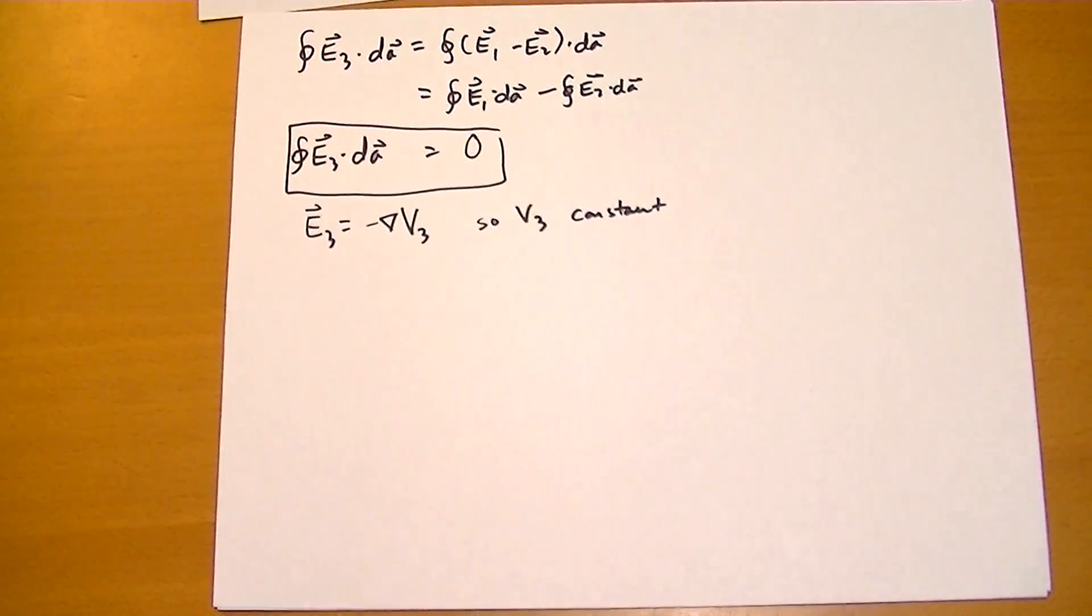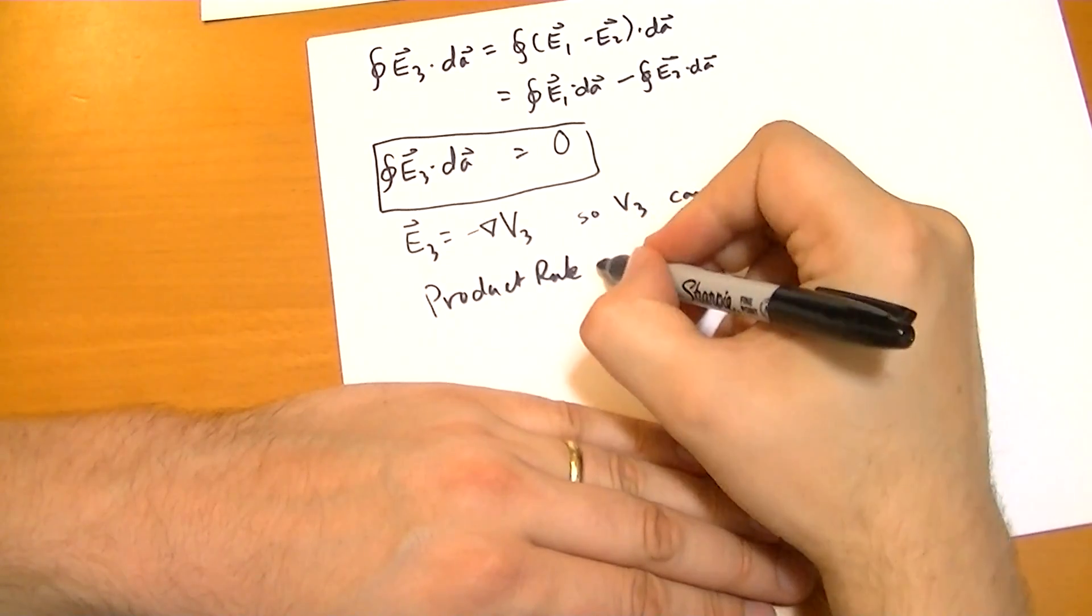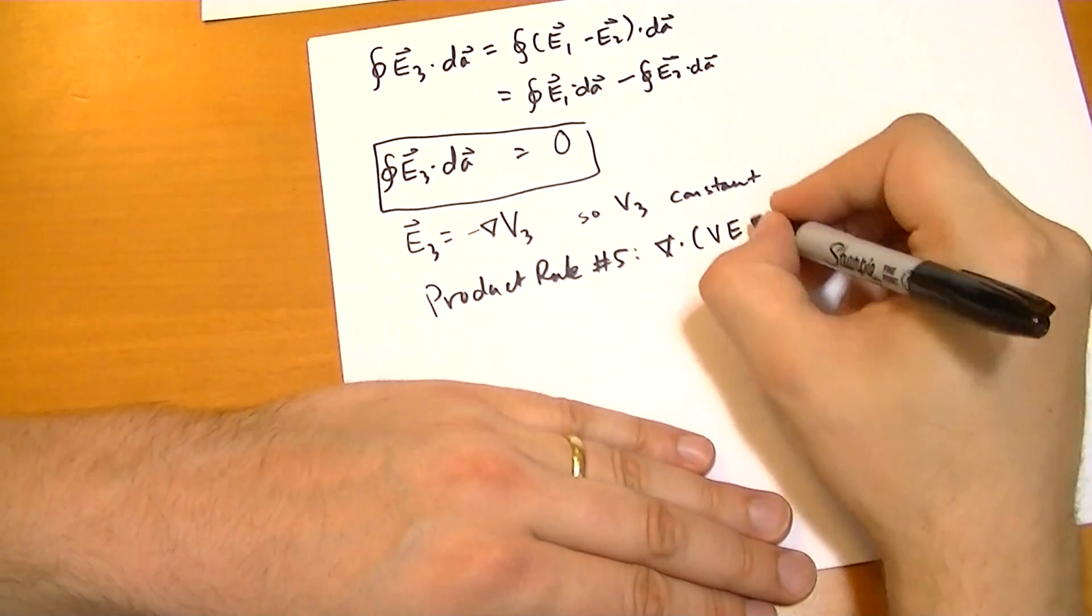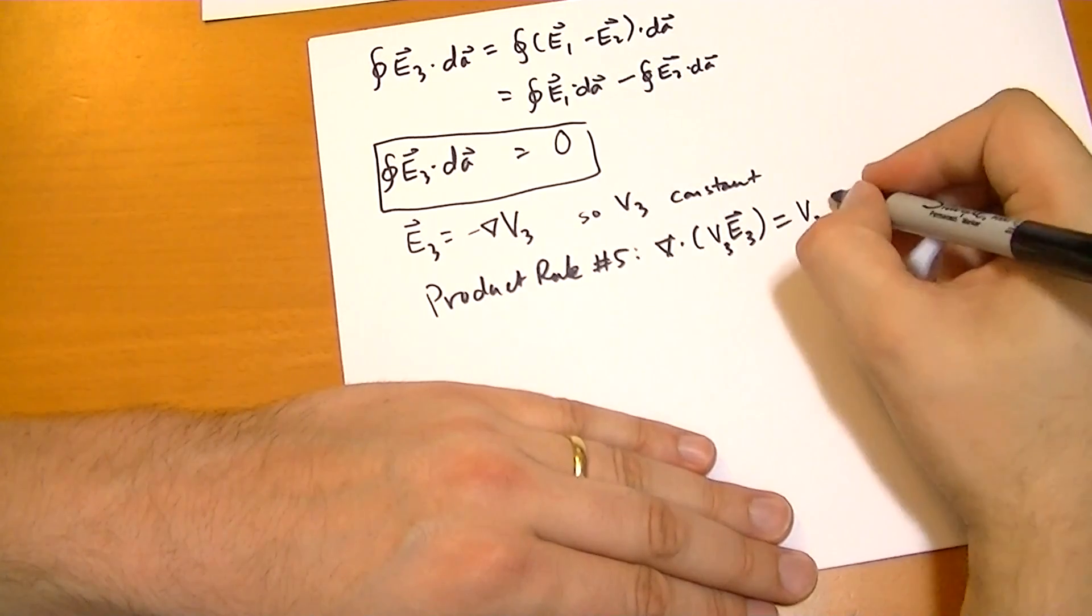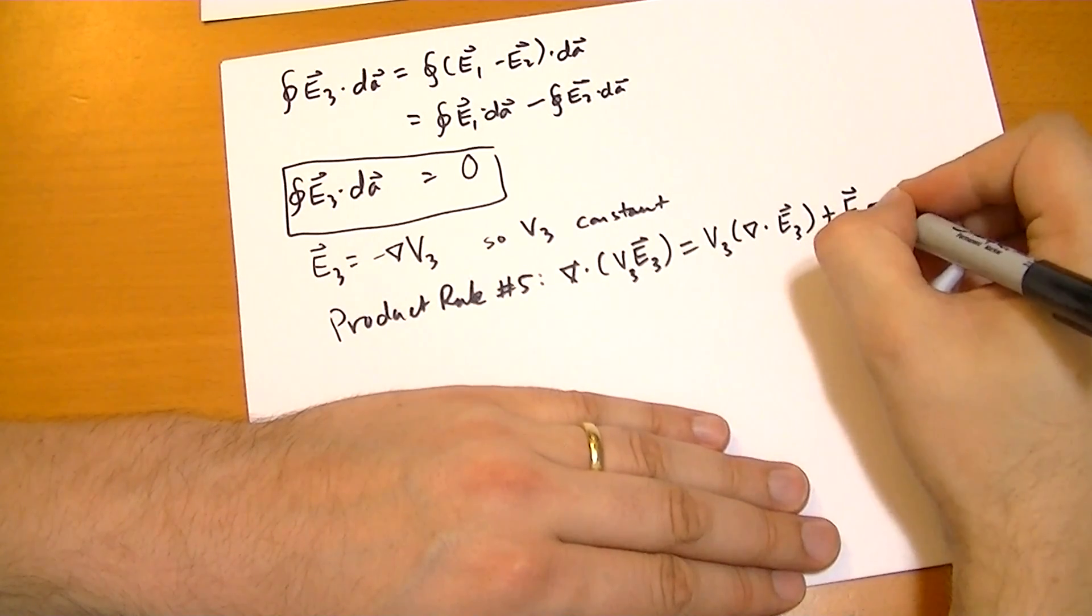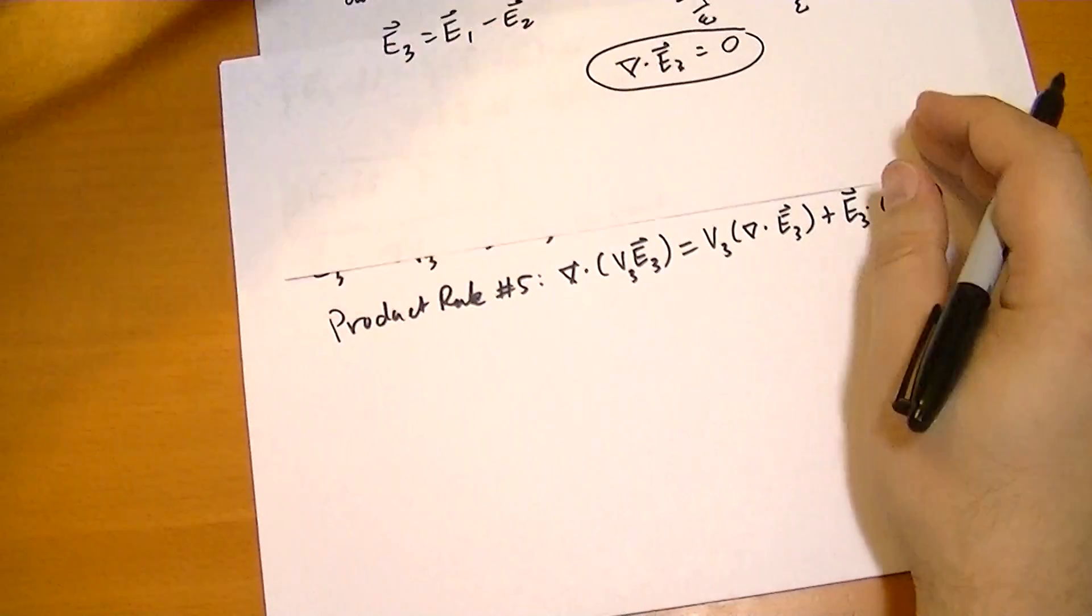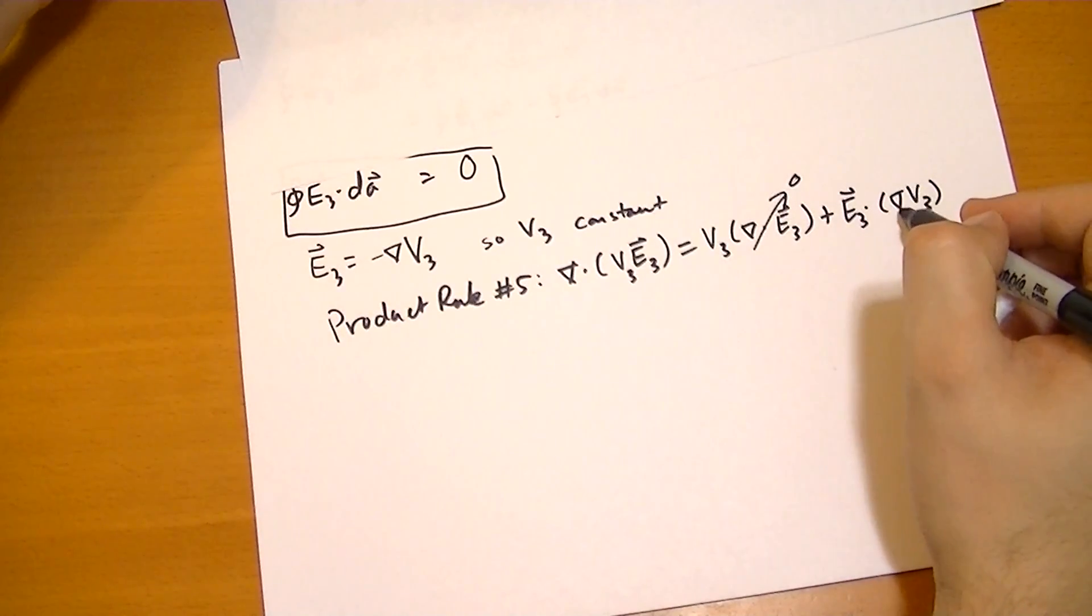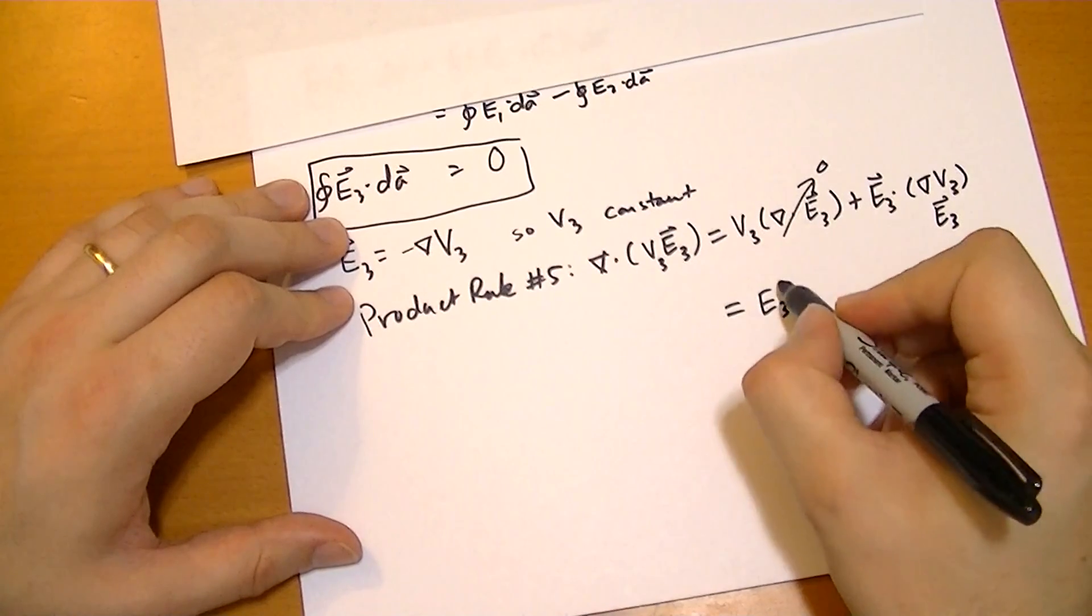So the next part, this is the trick, this is the core, the pivot point of this theorem. We take product rule number five. Look on the inside of your book cover. This states that the divergence of a scalar field times a vector field is going to be equal to that scalar field times the divergence of that vector field, plus the vector field dotted with the gradient of that scalar field. Now, I've just showed you earlier that the divergence of E3 is equal to zero everywhere. So that's zero. And the gradient of the potential is just E3. So we basically get this is equal to E3 squared.